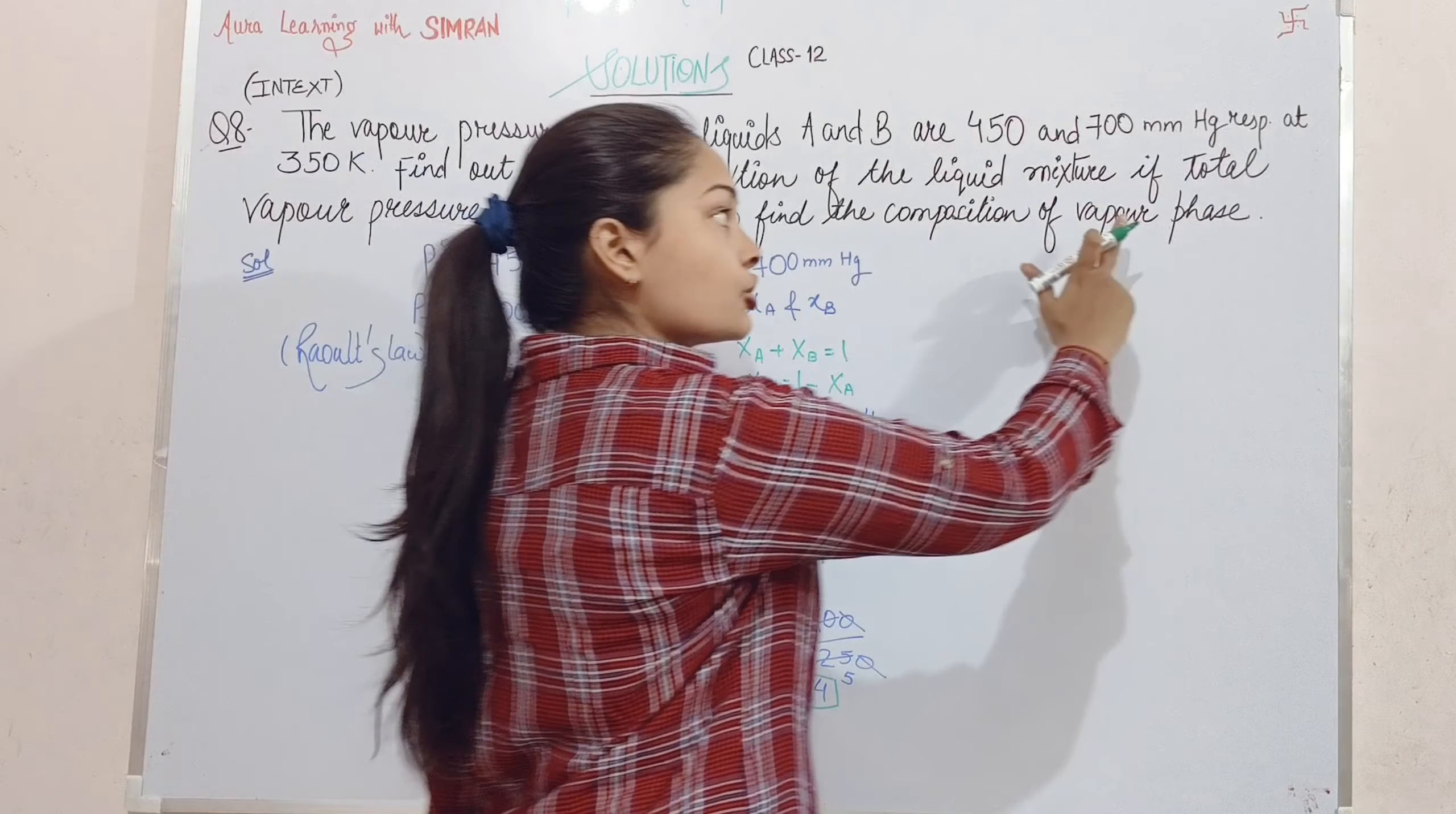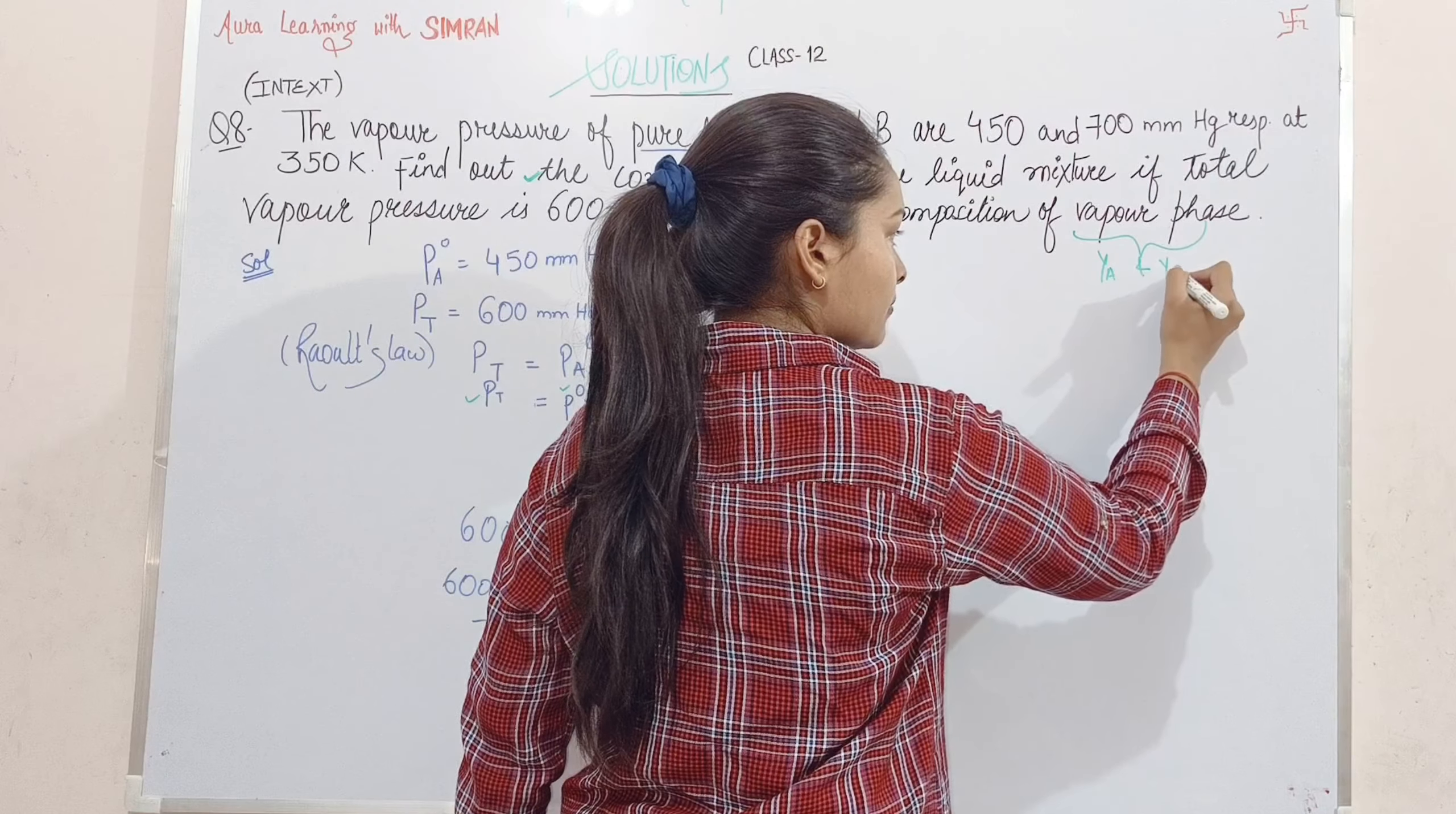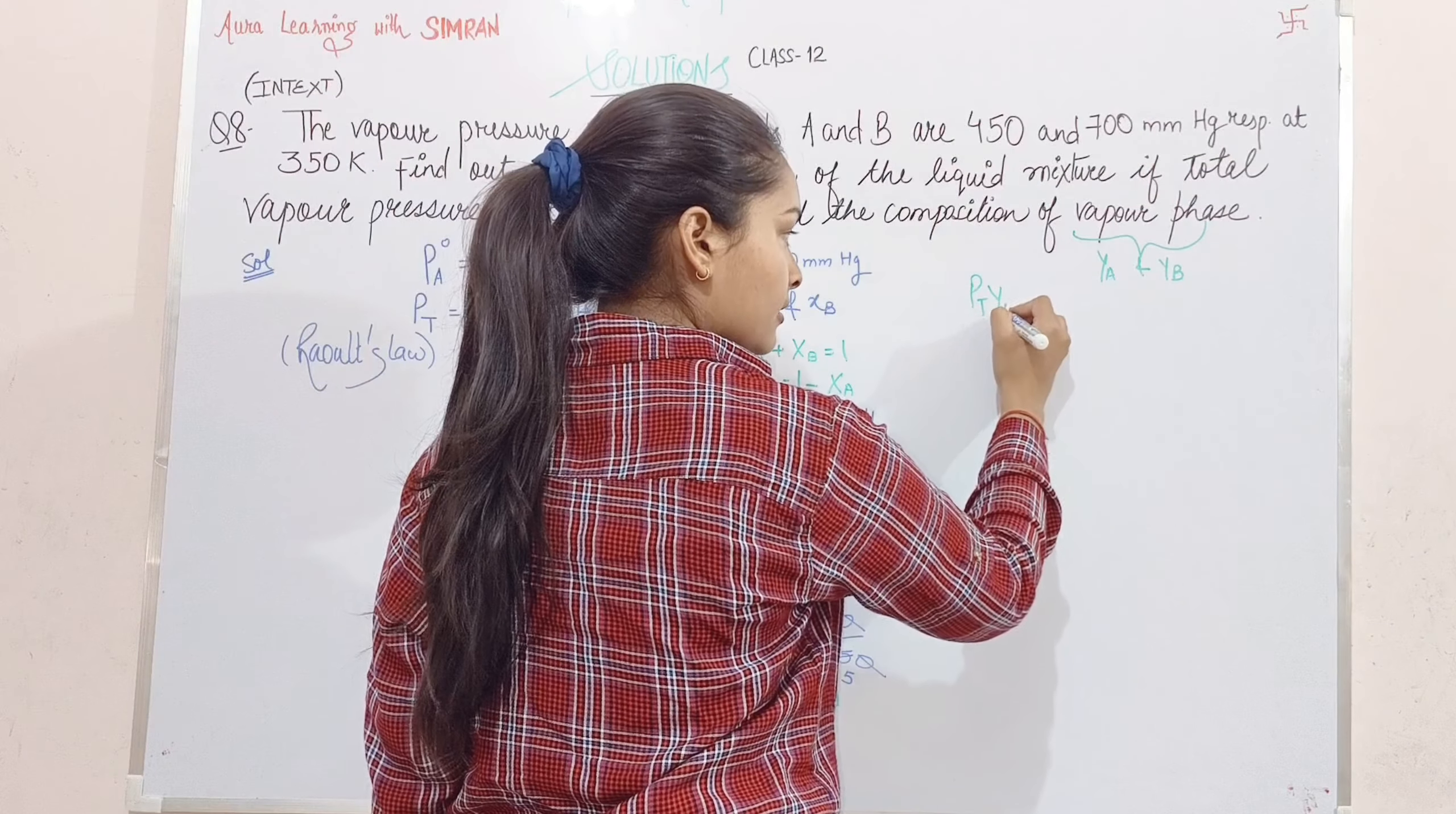Second part: also find the composition of vapor phase. Vapor phase composition is represented by yA and yB. What is the relation?